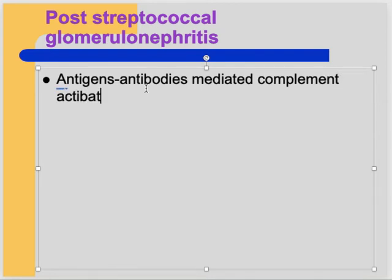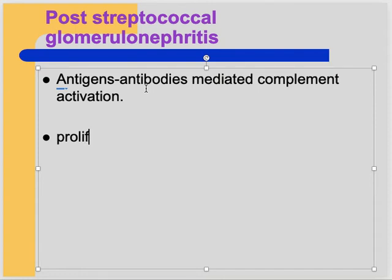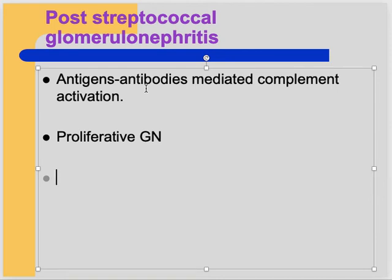These circulating antigen-antibody complexes activate complement, circulate in the blood, go to the kidney, and cause damage leading to proliferative glomerulonephritis.